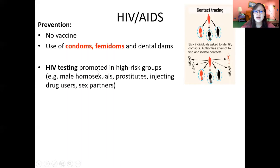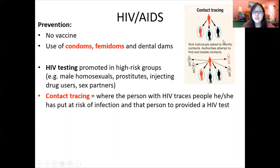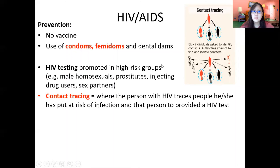HIV testing can be promoted in high-risk groups, for example male homosexuals, prostitutes, injecting drug users, and their sex partners. Contact tracing can also be used — you trace whoever the infected person has had contact with, putting them at risk of infection, and ask them to get tested as well. For example, if a person tests positive for HIV, they contact previous sexual partners and ask them to test as well.